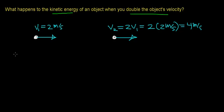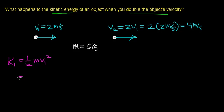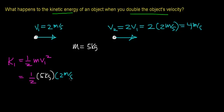Now the kinetic energy — we'll call it K1 — is one half the mass of the object times the velocity of the object squared. And the one thing that we haven't defined is: let's just say the mass of this object is 5 kilograms. So if we wanted to know what the kinetic energy of this object was when it's traveling at 2 meters per second, all we have to do is compute one half the mass, which is 5 kilograms, times the velocity of the object squared, which is 2 meters per second, and we square the entire term.